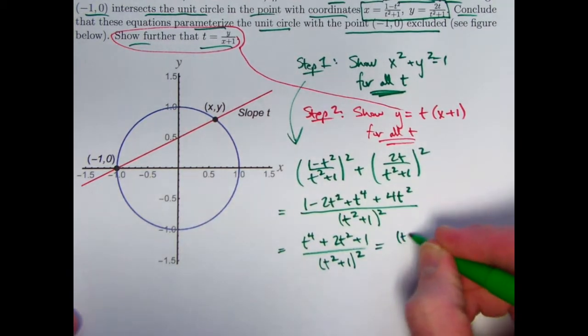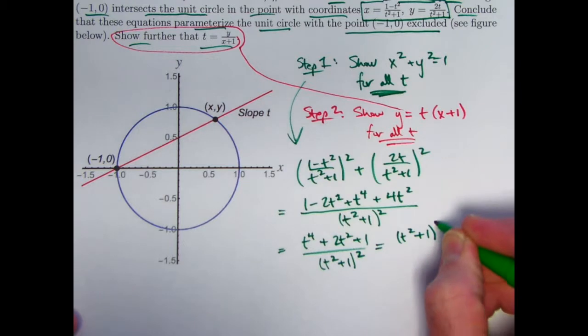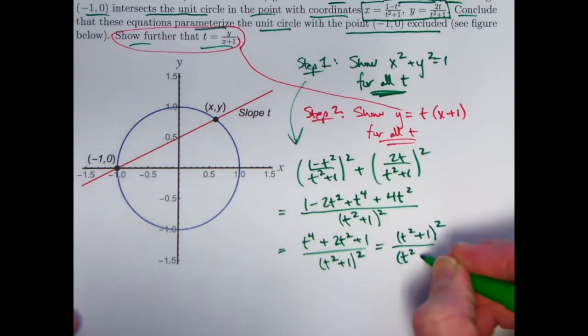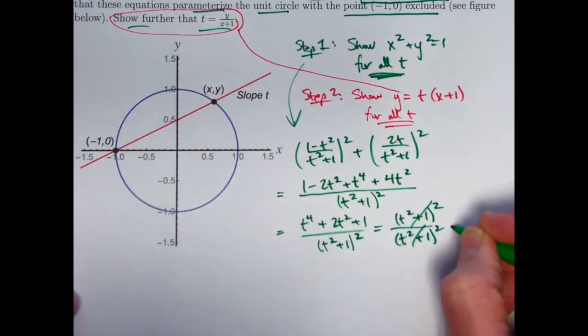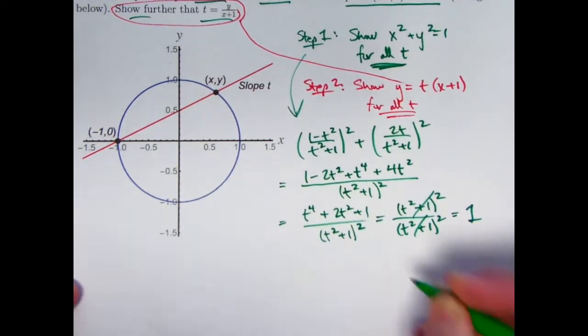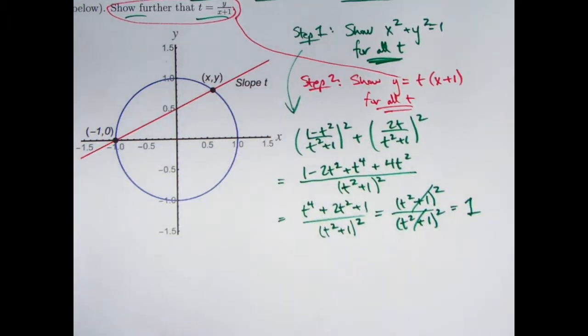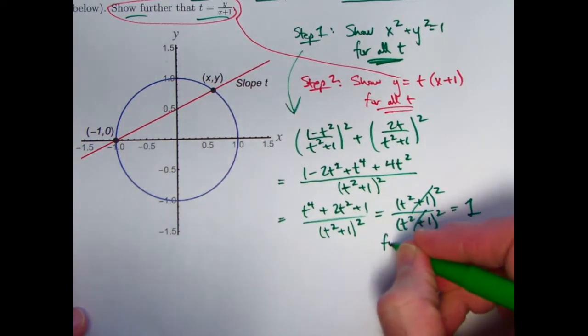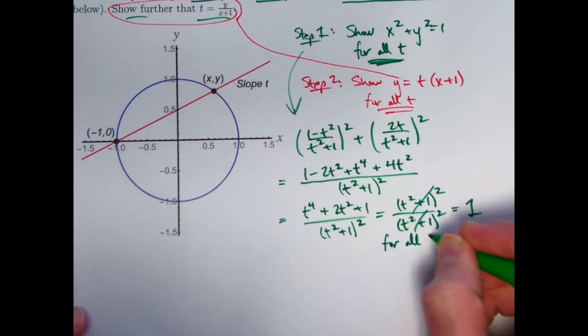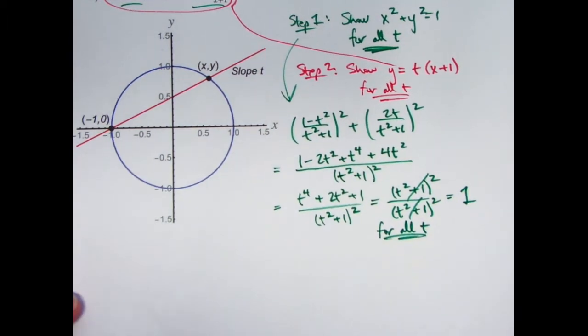Now what are we hoping? We're hoping this equals 1 for all t. Does it? Well, it's almost like magic. It does. You can factor the top. It is a perfect square. And in fact, it equals the bottom, (t²+1)². Those cancel for all t to 1. And we're never dividing by 0 here. t is a real number. It's not complex. We're never dividing by 0. This is true for all t. And that should definitely be emphasized.